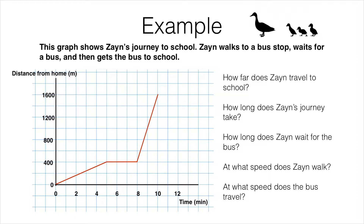At zero minutes after he leaves home, he is zero meters away, so he is basically at home. Then this section of the graph is constantly increasing — the line is going up — meaning he's moving further and further away from home. By five minutes after leaving, he has reached a point 400 meters away, which corresponds to Zane walking to a bus stop.